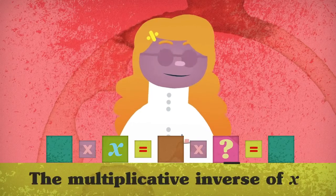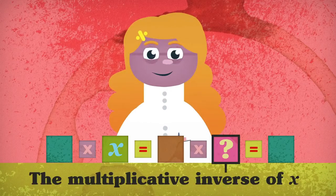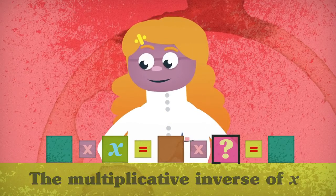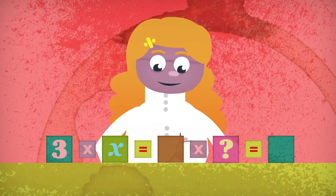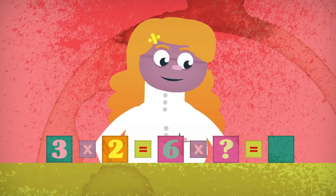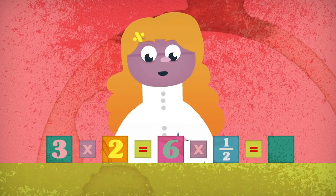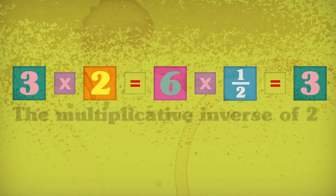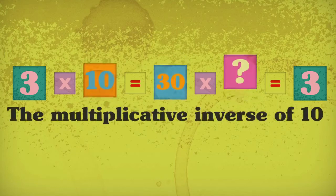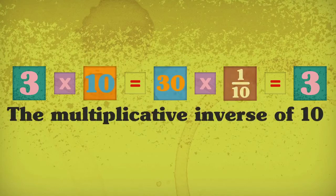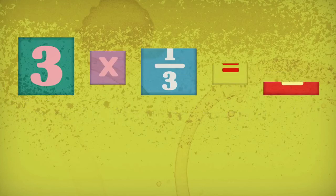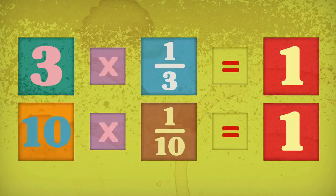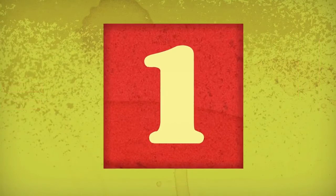For example, if you multiply 3 by 2 to get 6, you can then multiply by 1/2 to get back to 3. So the multiplicative inverse of 2 is 1/2, and the multiplicative inverse of 10 is 1/10. As you might notice, the product of any number and its multiplicative inverse is always 1.